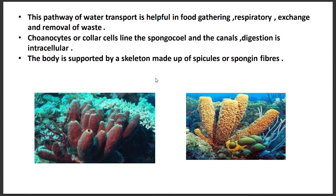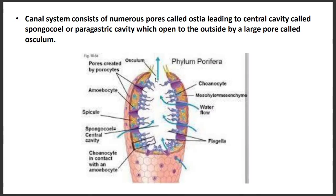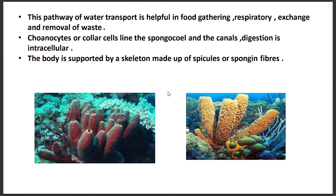The pathway of water transport is helpful in food gathering. Basically, through this water transport system, food is captured and gathered. Respiration is also performed, and organic and inorganic waste produced in the body is also exchanged. The choanocytes, which are collar cells with flagella-like structures, are attached to the sponge lining of the paragastric cavity.